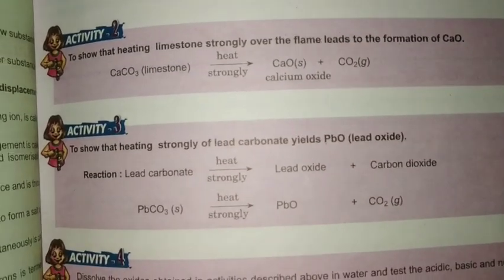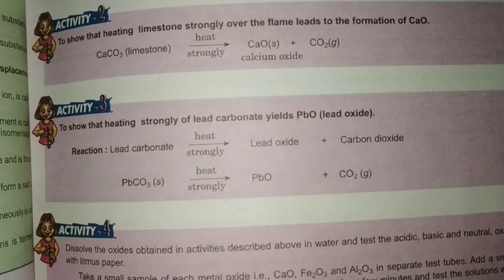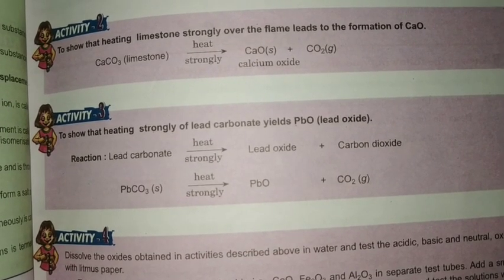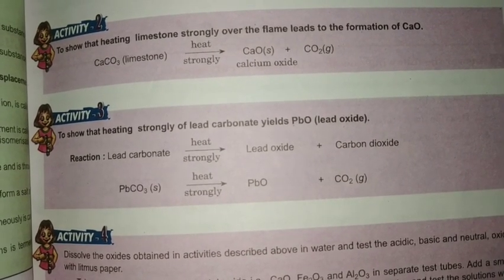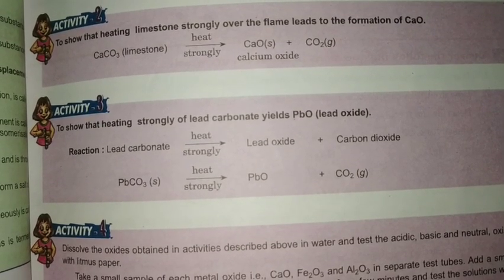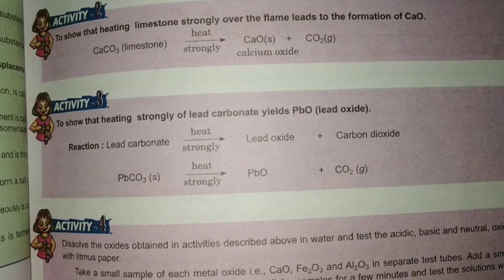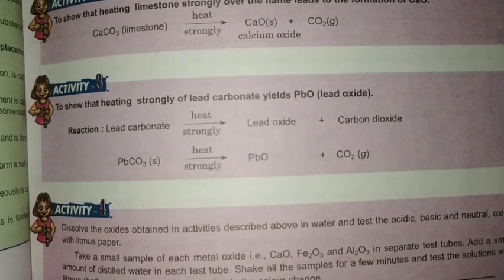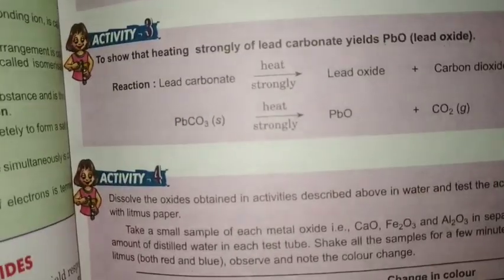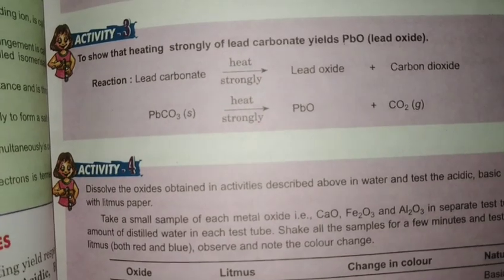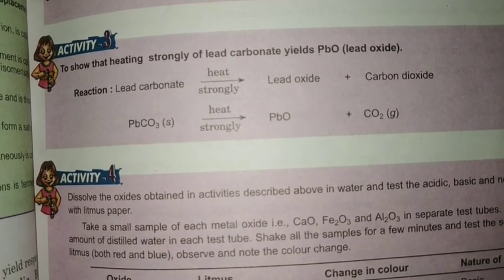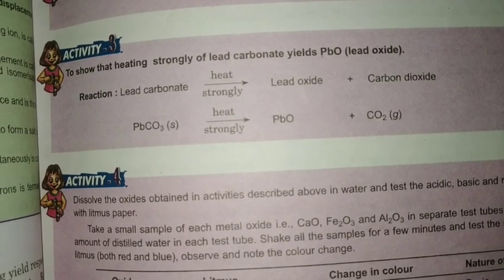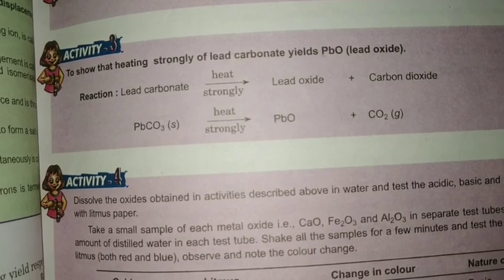Activity: to show that heating limestone strongly over the flame leads to the formation of CaO. If you take limestone, which is calcium carbonate, and heat it strongly, you get calcium oxide — called quicklime — and carbon dioxide gas. Another example: lead carbonate (PbCO3), on heating, gives lead oxide and carbon dioxide gas.